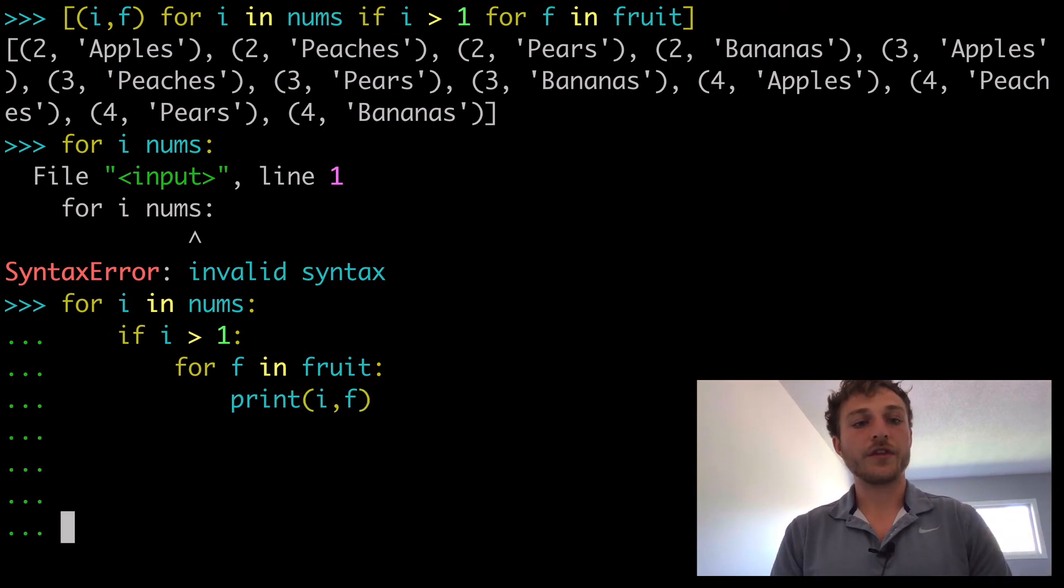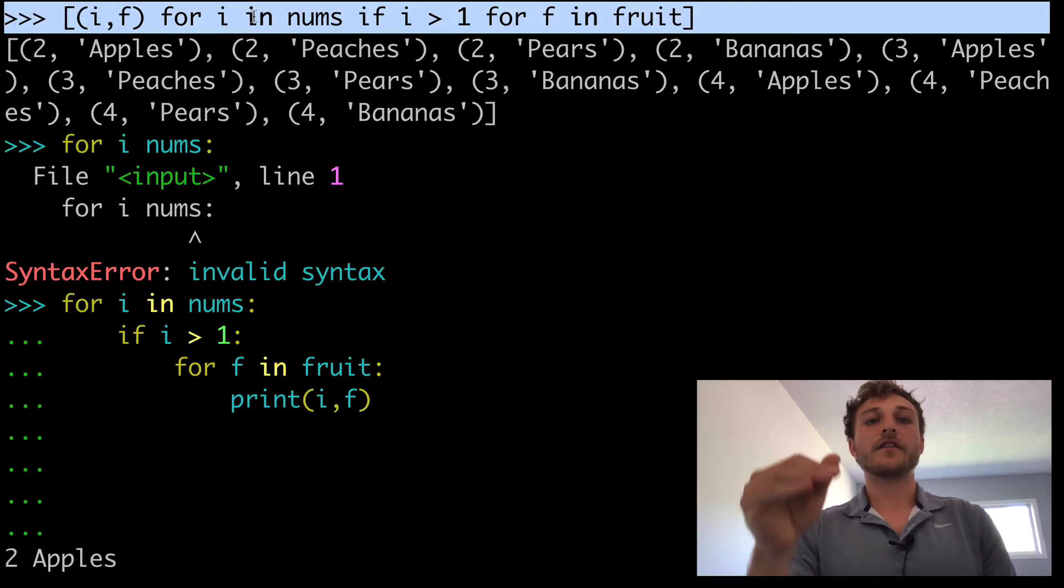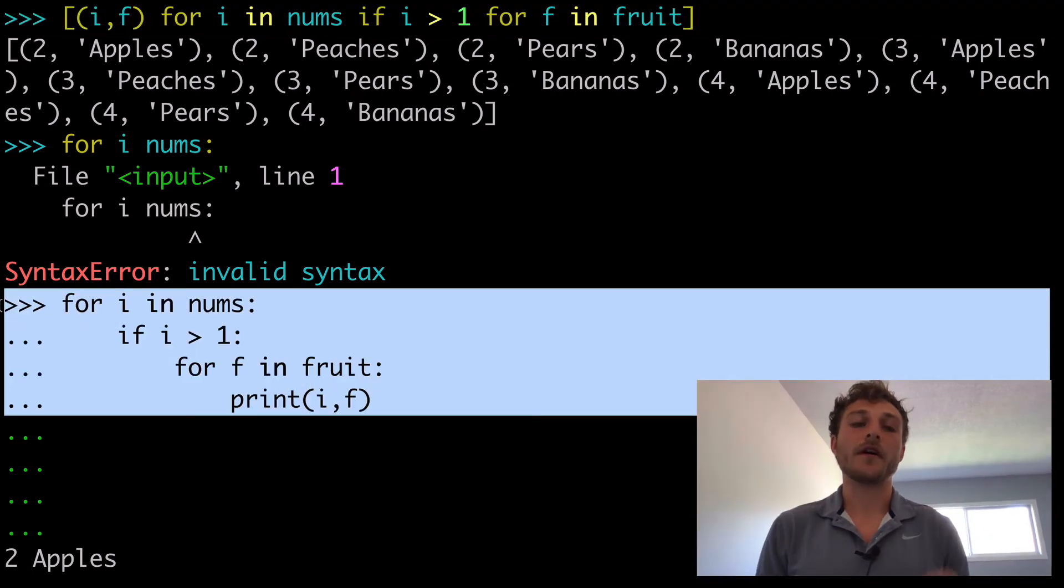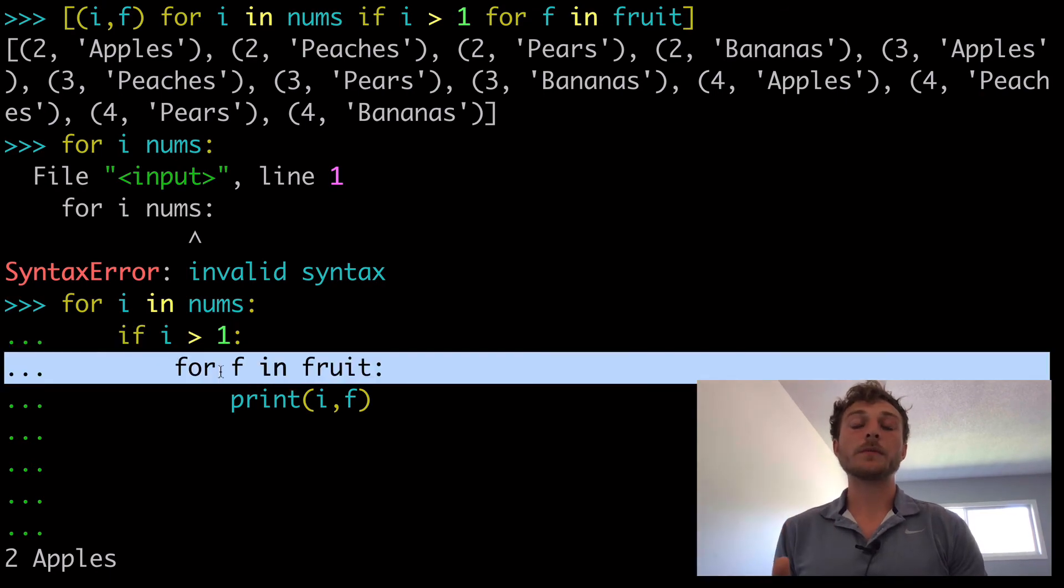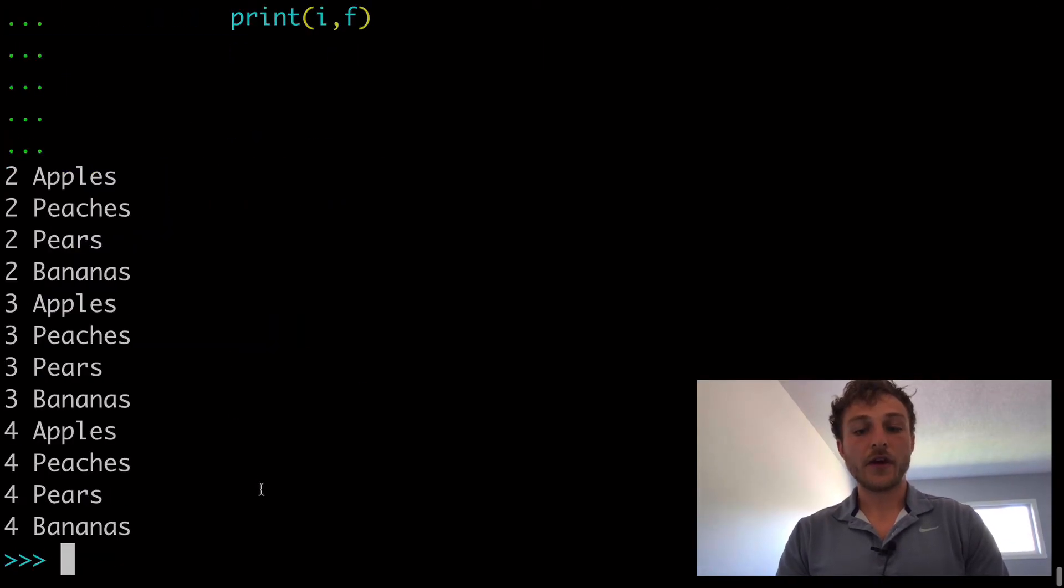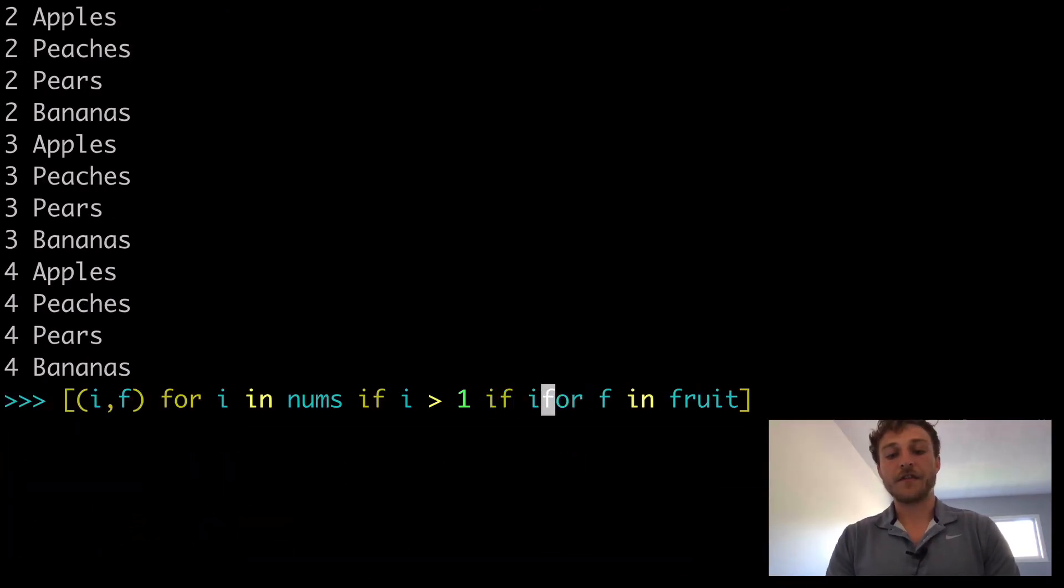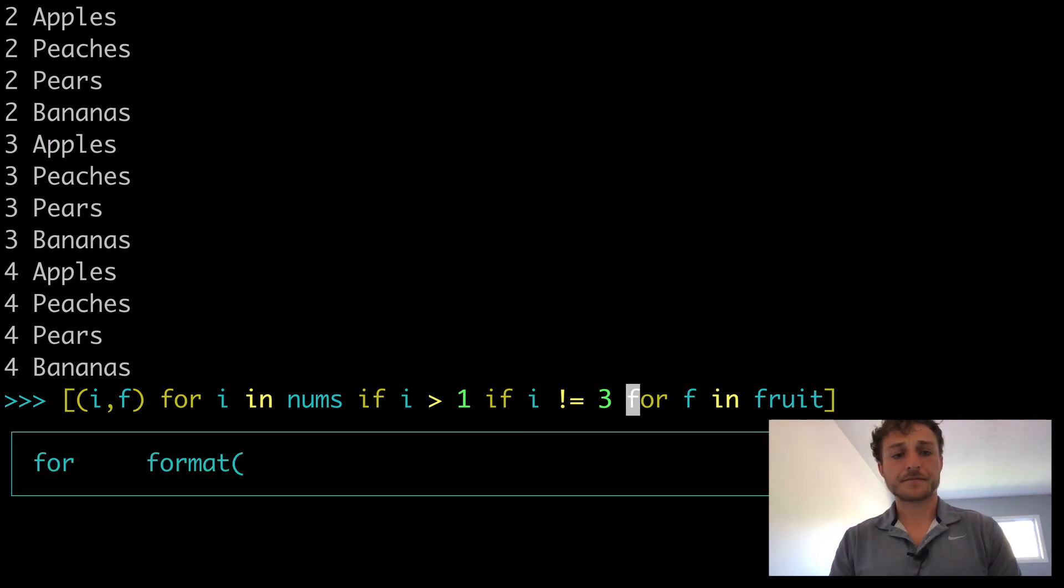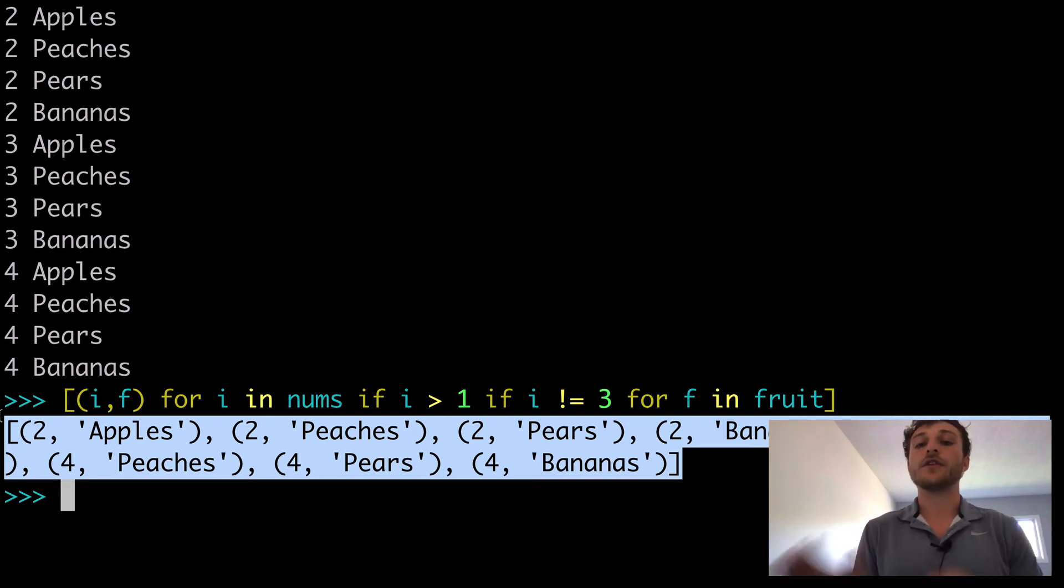Well, it would look like for i in nums, it would look like for i in nums, if i greater than 1, for f in fruit, print i f. So these two things are equivalent. And here we can do, if i greater than 1, if i does not equal 3, we can run this again and you see all of our 3s are gone because we don't want the 1 or we want greater than 1 and we don't want 3. So all of our keys are 2 and 4.